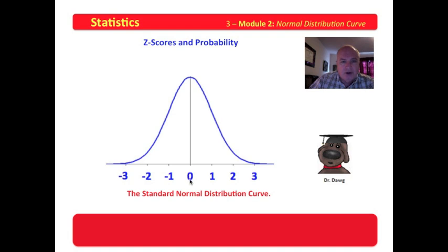You would read this curve to say here's the mean: one standard deviation above, two standard deviations above, three standard deviations above the mean. One standard deviation below, two standard deviations below, and three standard deviations below the mean.